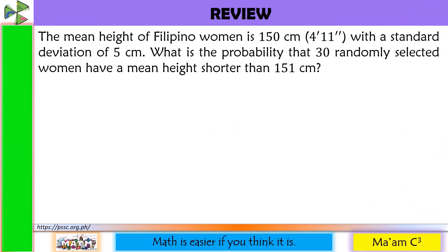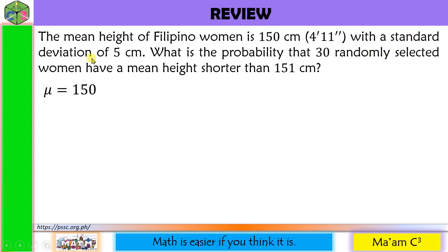Let's have a quick review of our previous lesson. The mean height of Filipino women is 150 centimeters — that is 4 feet and 11 inches tall — with a standard deviation of 5 centimeters. What is the probability that 30 randomly selected women have a mean height shorter than 151 centimeters? So first, let us identify the given. The population mean is 150, sigma is 5, the sample size n is 30, and the sample mean is 151.